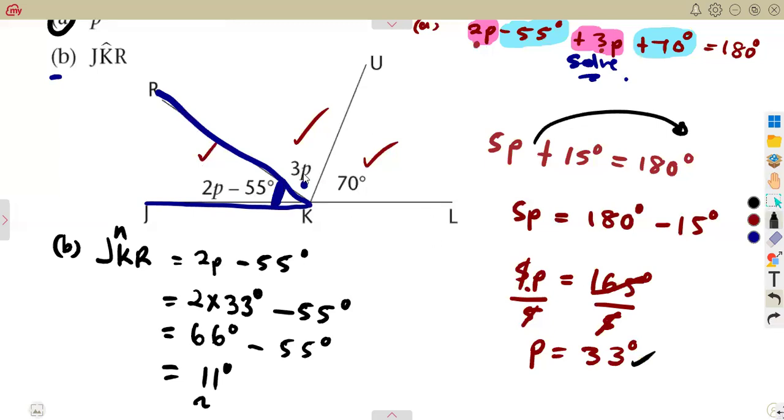You can substitute that angle even on the 3p that you are given. The p there is 33, so you can substitute 3 times 33. Then whatever you're going to obtain when you add is supposed to be equal to 180 degrees. But in this case, it was just to calculate angle JKR. So that's it from Mason African Motifs till we meet again.